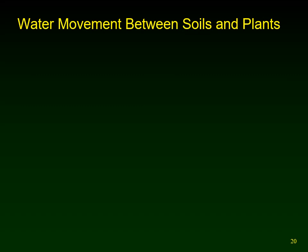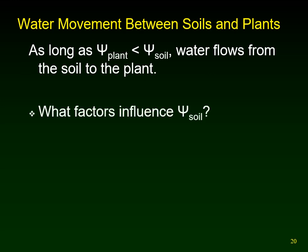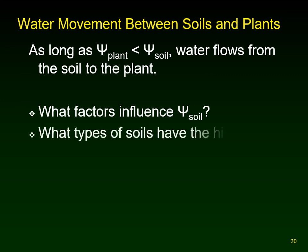When looking at water movement between soils and plants, as long as the water potential in the plant is lower than in the soil, water moves from soil into the plant. The factors influencing water potential in the soil include particle type, amount of organic material, and amount of clay — all affecting how tightly water is held. Sandy soils will have higher water potentials and release water more easily, while clay soils have lower water potentials and bind water very tightly, making it harder for plants to extract.